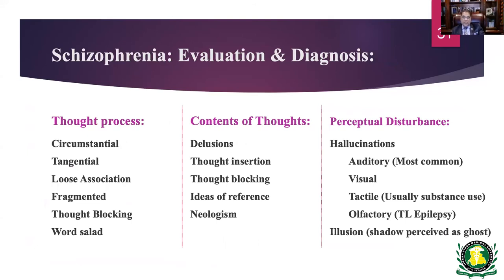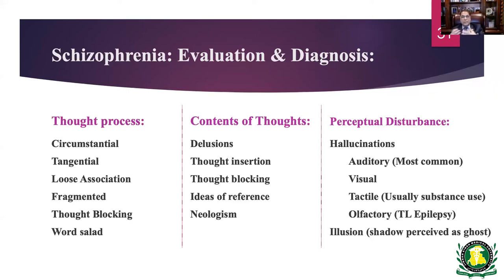In objective findings, assess thought process, content, and perception disturbances. Thought process can be circumstantial — drifting from the topic — tangential — touching the question then sliding away — loose associations with unrelated fragments, thought blocking where the patient is still answering an earlier question, or word salad — random words with no coherent meaning. Thought content can include delusions, thought insertion where people put thoughts in their mind, thought broadcasting where others can read their mind, and ideas of reference where TV characters take on special meaning or seem to control the patient's mind.